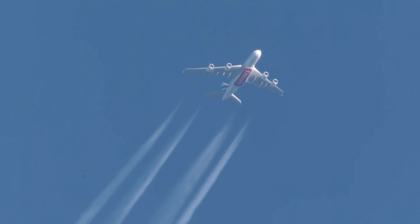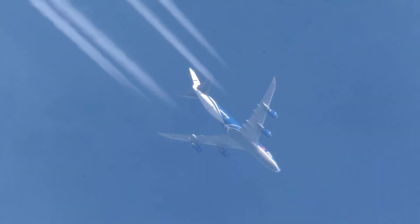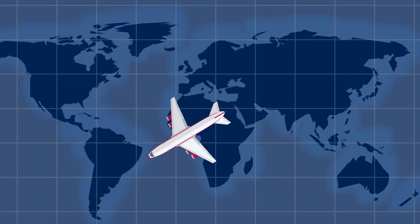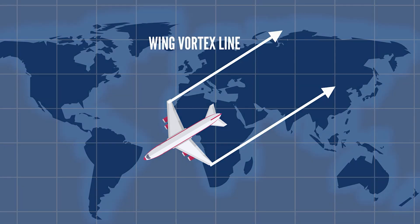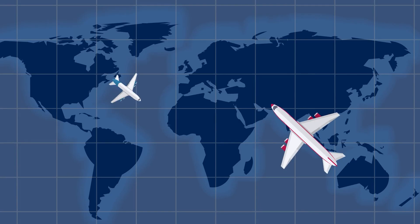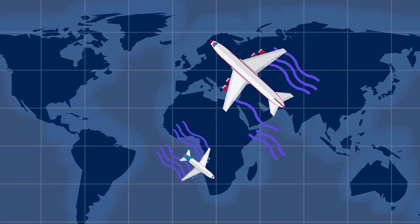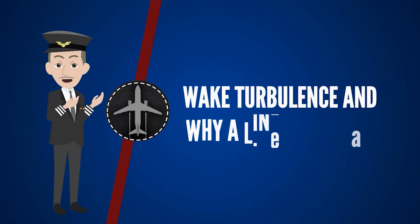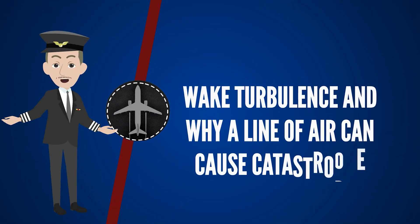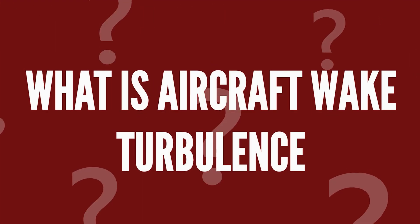This wake usually appears when the aircraft is moving through clouds or when there's enough moisture in the air to leave behind trails. This wake is generated by wingtip vortices, and an aircraft that encounters another aircraft's tip vortices can experience wake turbulence. Today we discuss wake turbulence and why a line of air can cause catastrophe.